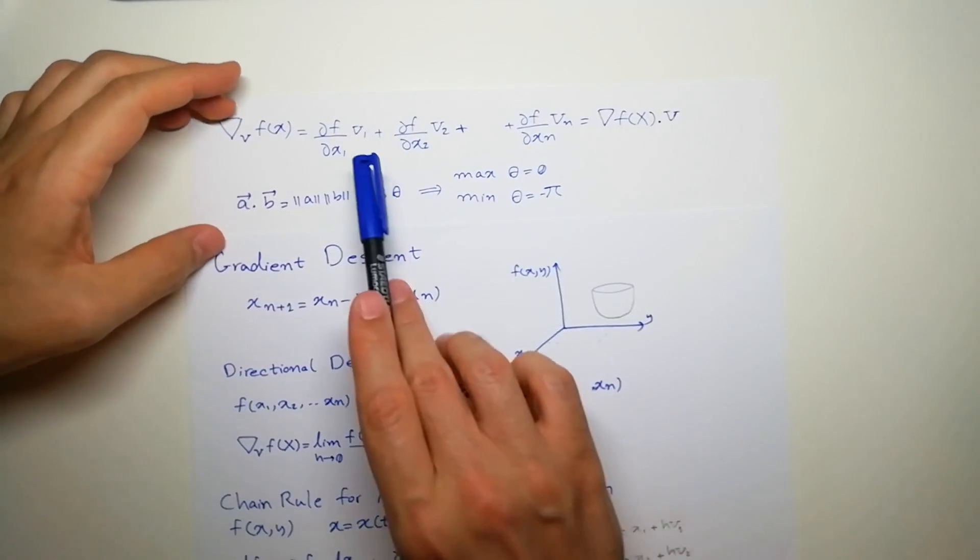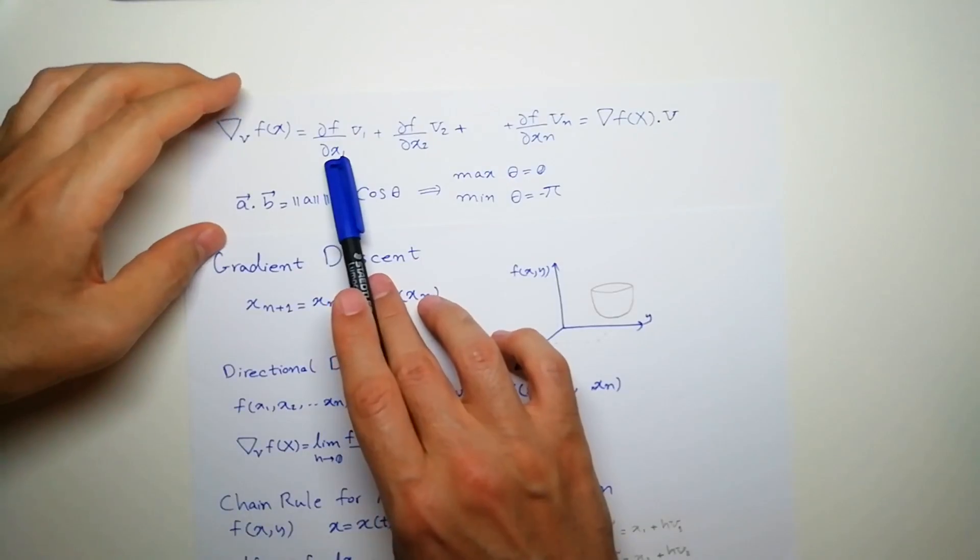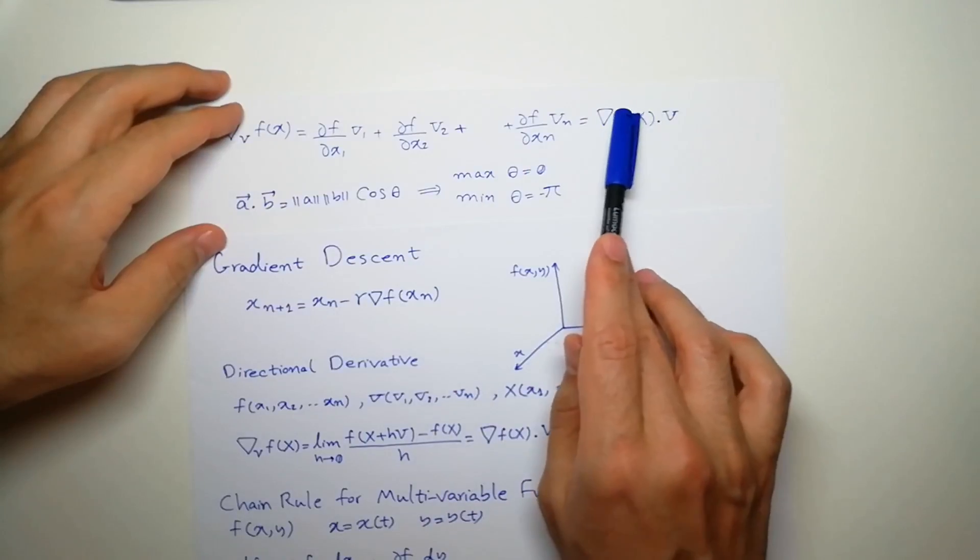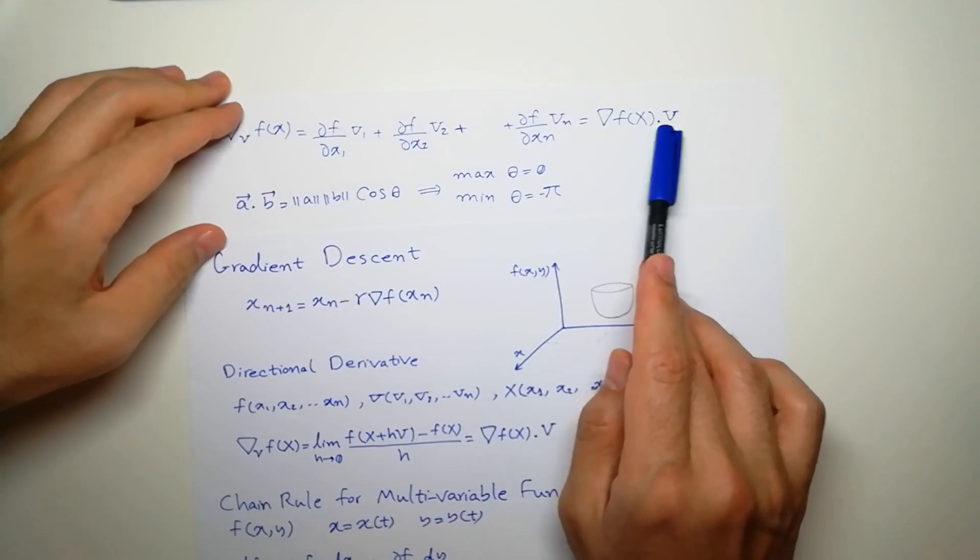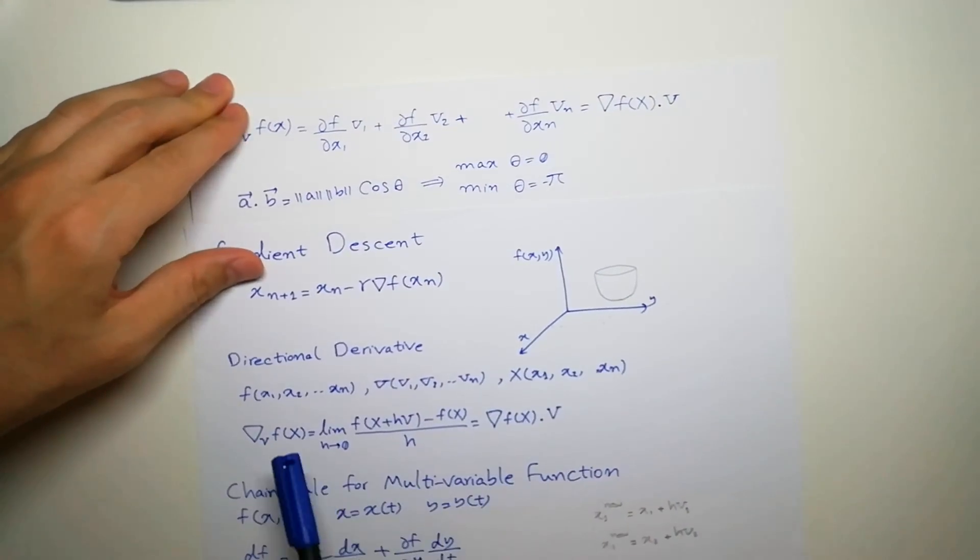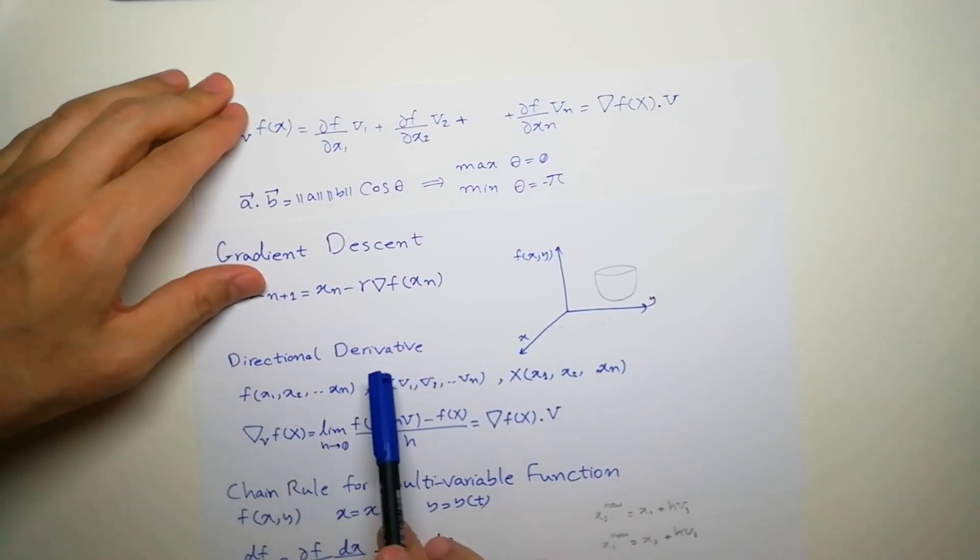So as you can see, we can simply write this as the derivative of the function at point x, ∇f(x), dot product by vector v. So this is the equation that we had here: directional derivative.